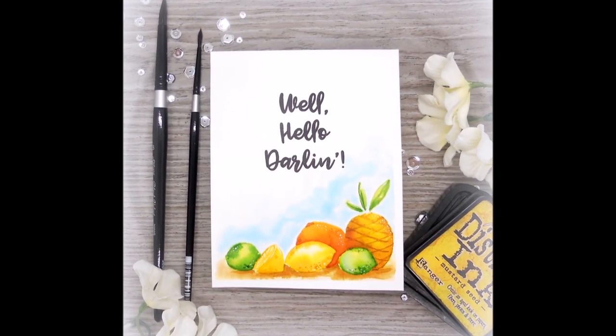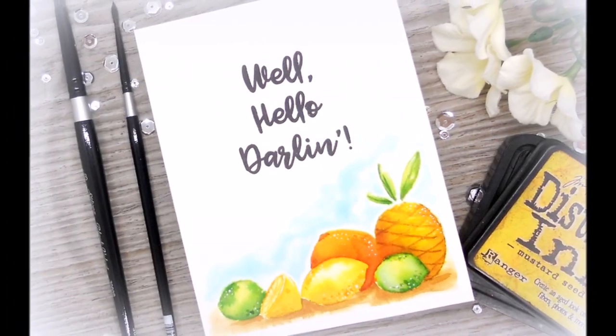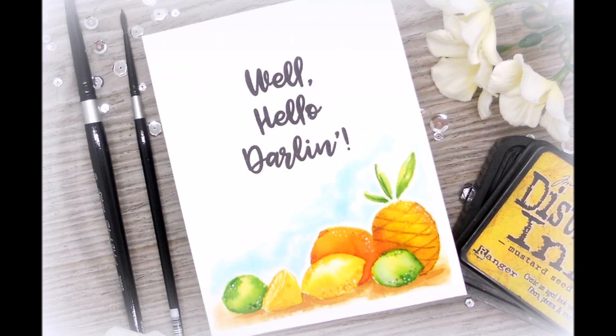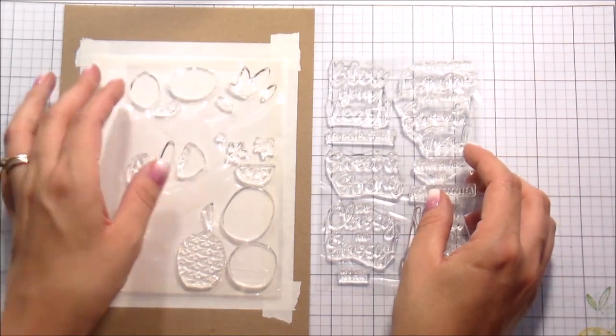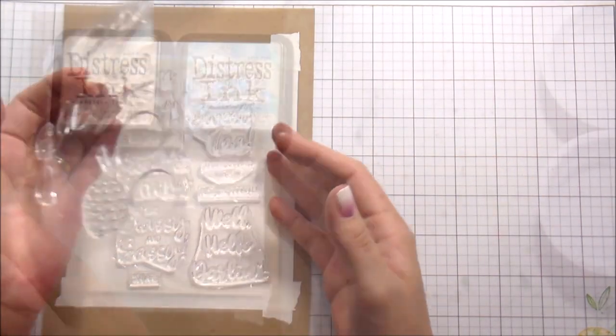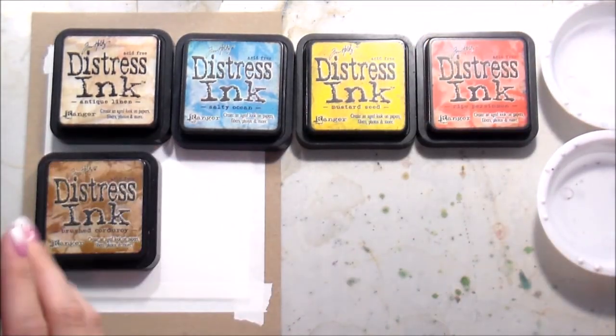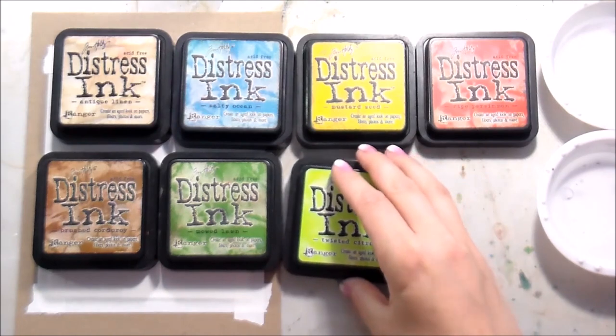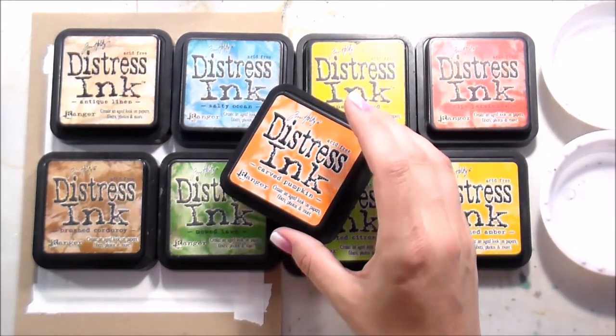Hi guys, it's Kelly Latavola here and I'm back with another video for WPlus9. Today we are going to be using some new stamp sets from the July 2017 release. The first one that we're going to be using is the Summer Citrus, and then the second one is the Southern Sentiments. Both of those are new for July of 17.